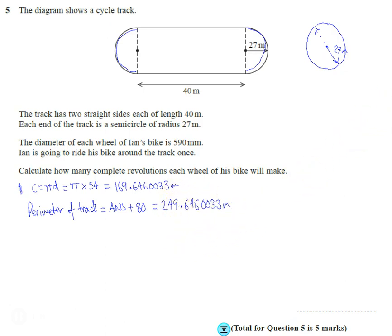Okay, so if I just switch to a different colour and now consider what's happening with Ian's bike. So if I consider Ian's bike wheel, well we're told that it's 590 millimetres. Well, 590 millimetres is the same as 59 centimetres, which is the same as 0.59 metres. So I know the diameter of his bike wheel is 0.59 metres.